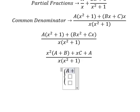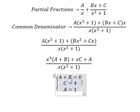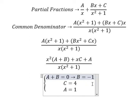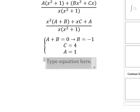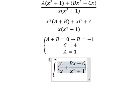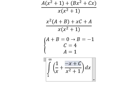So our system of equations is: A plus B equals zero, C equals 4, and A equals 1. Substituting, B equals negative 1. Therefore A equals 1, B equals negative 1, and C equals 4.